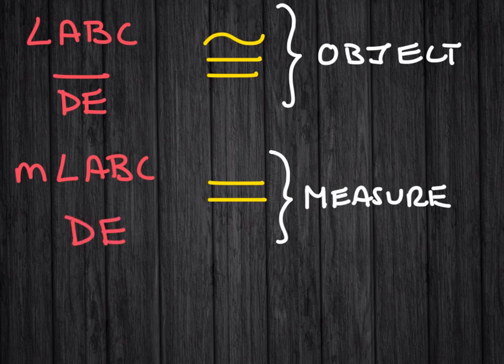Notice the difference. Objects are referred to as being identical or congruent, and measurements are referred to as being equal to each other. A very important distinguishing factor.